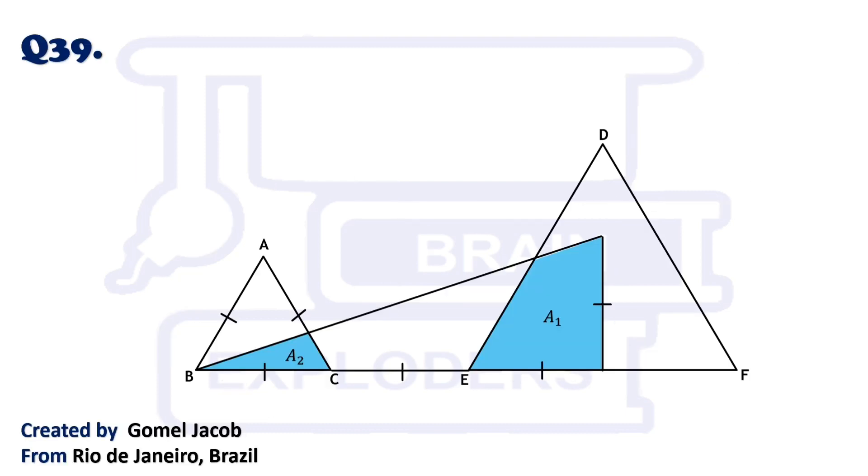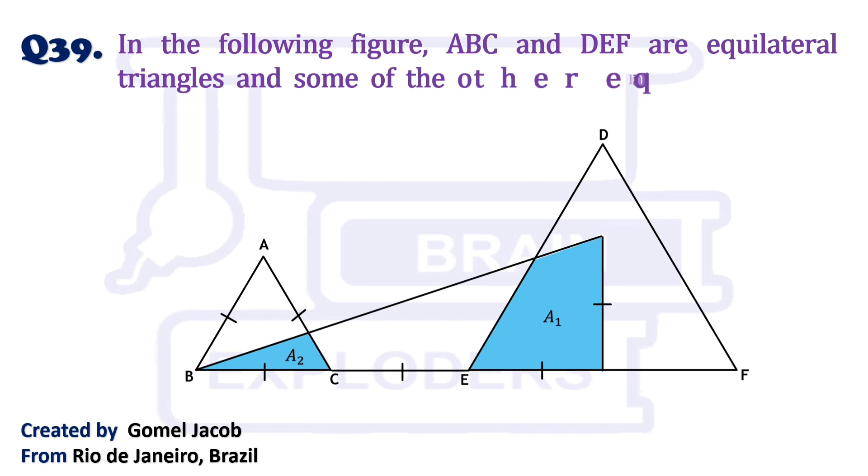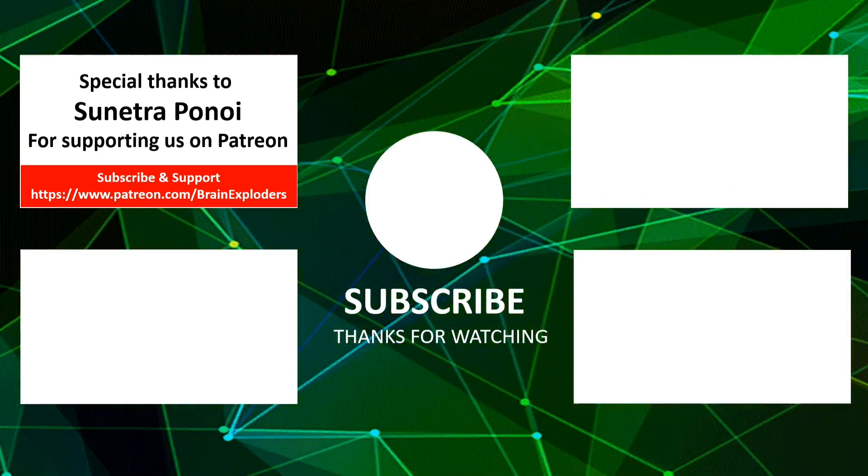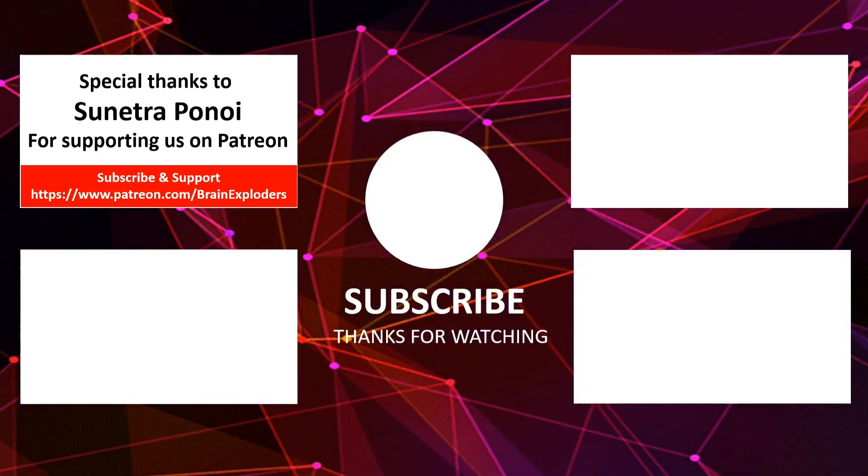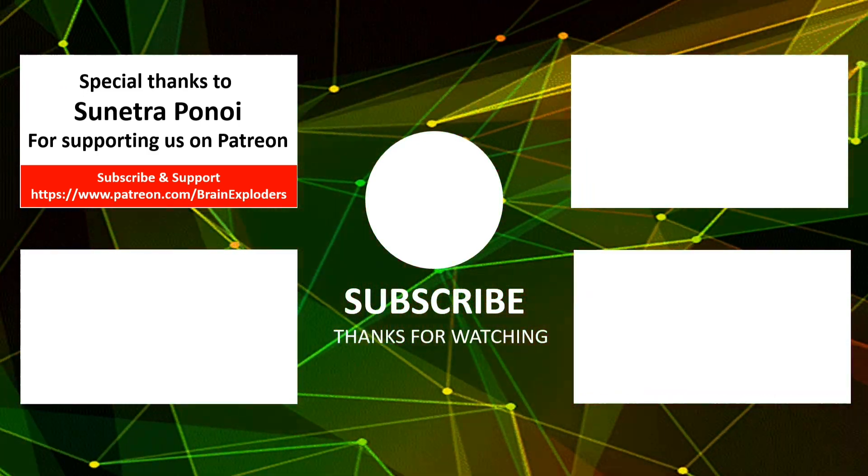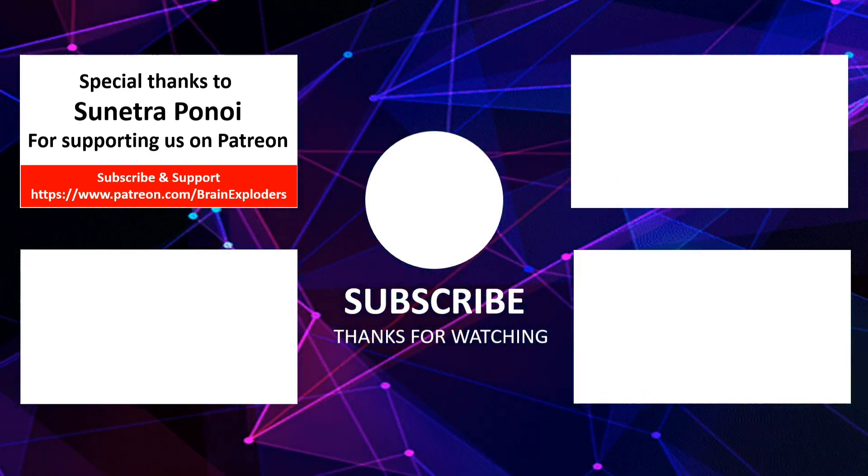Let's move toward another question. In the following figure, ABC and DEF are equilateral triangles and some of the other equal line segments are marked. Find the ratio of area A2 and A1. Try this question and send us your solution, and if you have any question like this then please share with us. Don't forget to like and share our video, and for more such videos subscribe to our channel Brain Exploders. Thanks for watching.